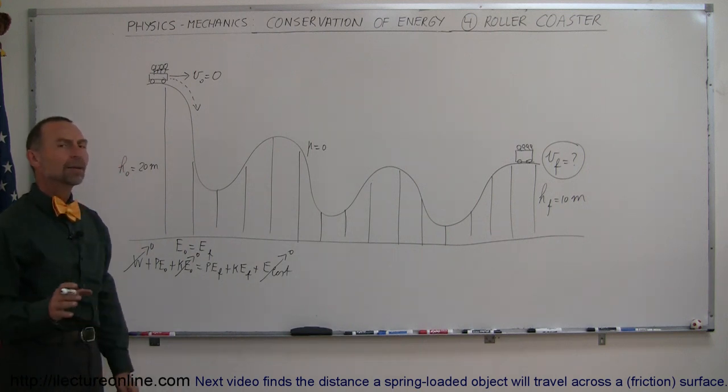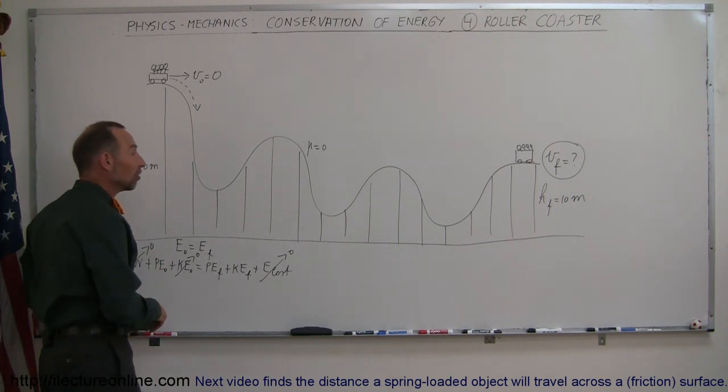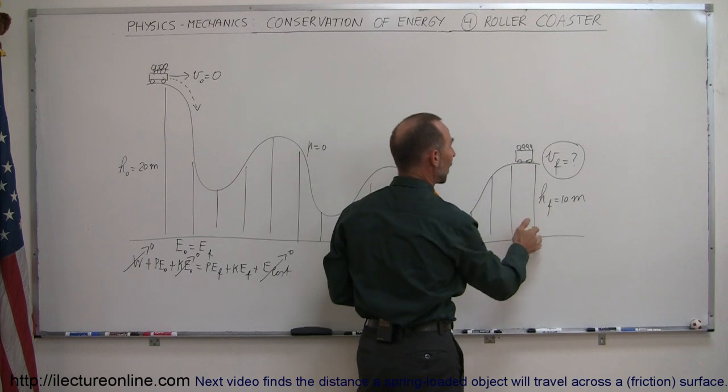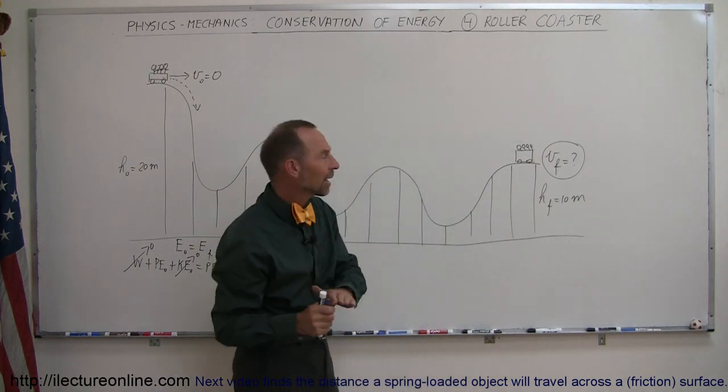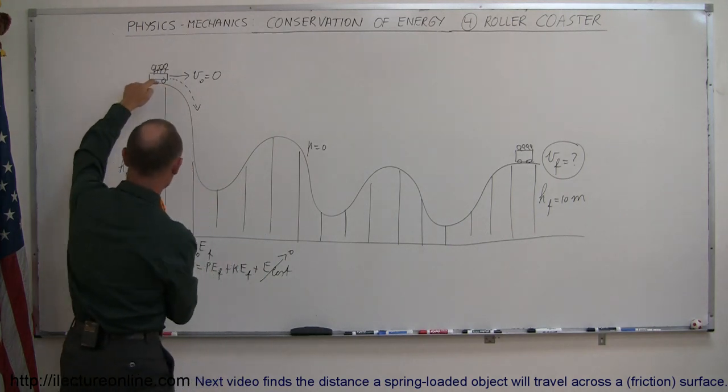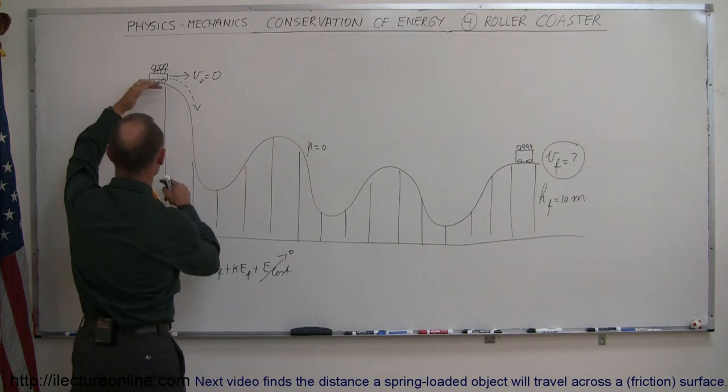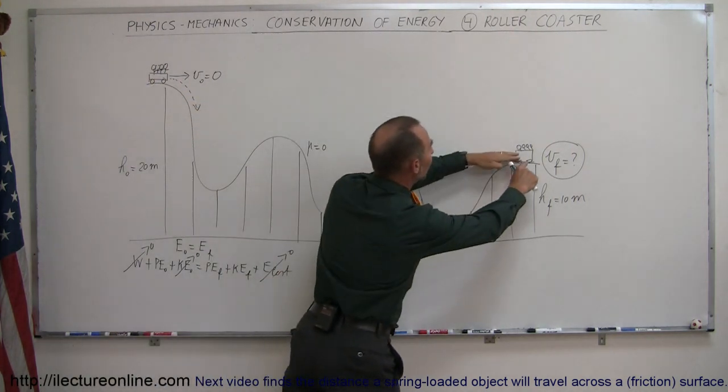Now we can even make it a little bit easier by arbitrarily calling this zero height. So even though we have a height reference to the ground, it's the difference in the height that matters. It's the difference between this height and that height. Notice if I take 20 minus 10 I get the same result as if I go 10 minus 0.